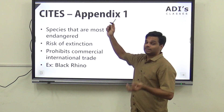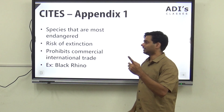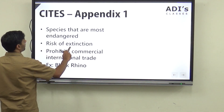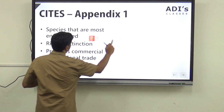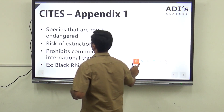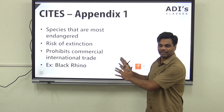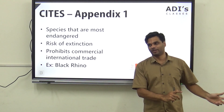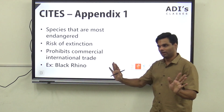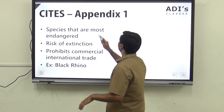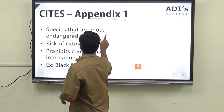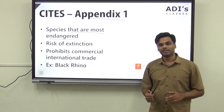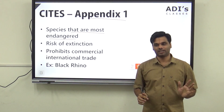Now there are three appendices. Focus on this for two minutes because if you understand CITES, then you will understand CMS also — the next one we are talking about — because both have the same structure. Appendix one has species that are most endangered.